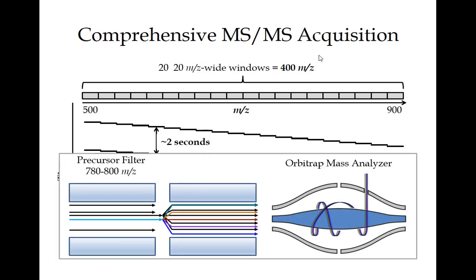This is what it would look like inside a Q Exactive. You've got this quadrupole filter set for a given window, and unlike an SRM experiment where you're only letting in a very specific ion through a ~1.7 m/z window, here we're letting in 20 m/z, so multiple precursors come in. Each precursor generates fragments, and you acquire this mixed fragmentation spectrum. This is done on a full-scan mass analyzer — in this case an Orbitrap.